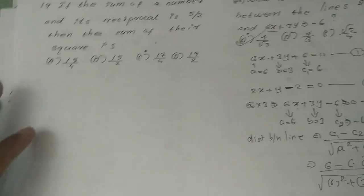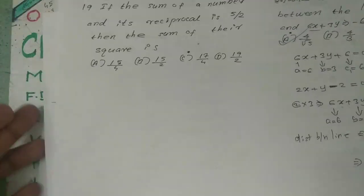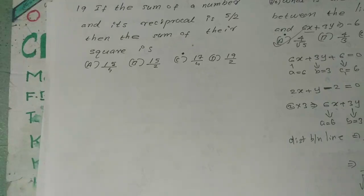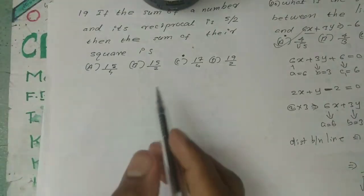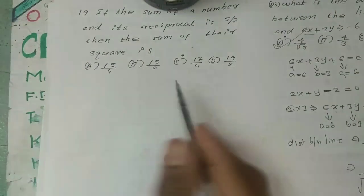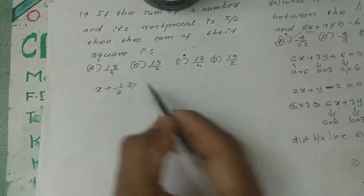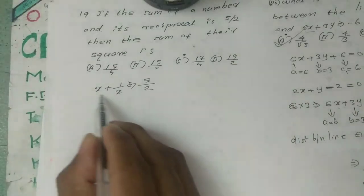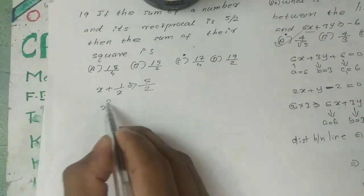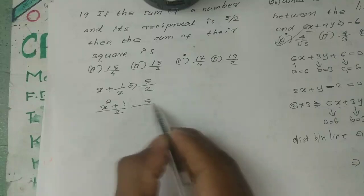Next problem: if the sum of a number and its reciprocal is 5/2, then the sum of their squares is what? The sum of a number and its reciprocal equals 5/2, so x + 1/x = 5/2, which gives x squared plus 1 over x equals 5/2.